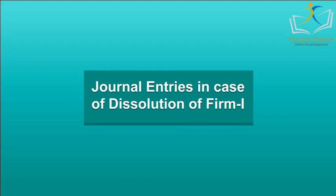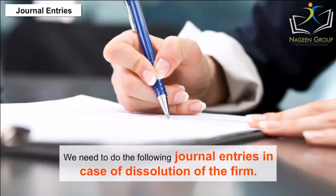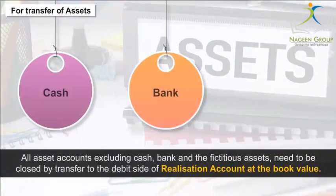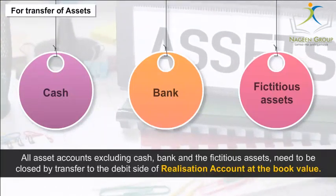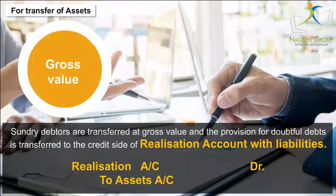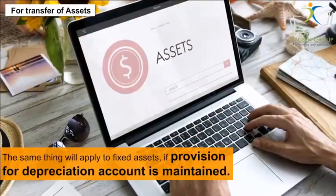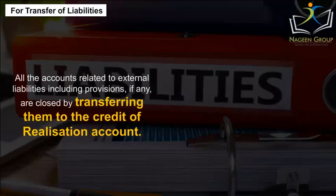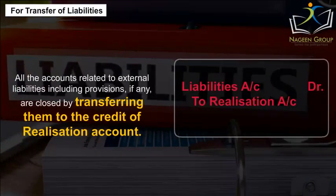Journal Entries in Case of Dissolution of Firm: For transfer of assets, all asset accounts excluding cash, bank, and fictitious assets need to be closed by transfer to the debit side of the realization account at book value. Sundry debtors is transferred at gross value and the provision for doubtful debts is transferred to the credit side of realization account. The same applies to fixed assets if a provision for depreciation account is maintained. For transfer of liabilities, all accounts related to external liabilities, including provisions if any, are closed by transferring them to the credit of realization account.